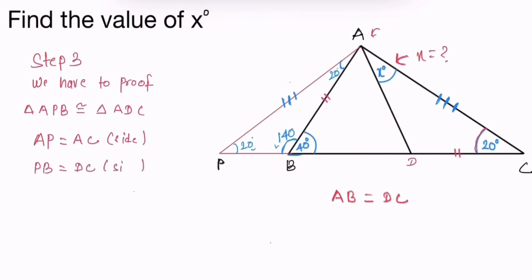PB is equal to DC, sides are equal, and angle P is equal to angle C. So we have proved that triangle PAB is congruent to triangle ADC.